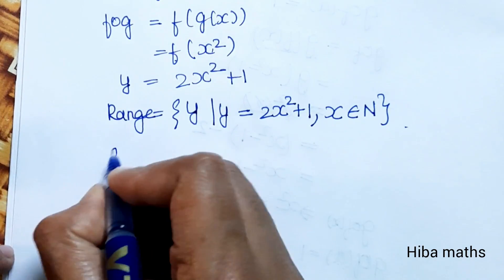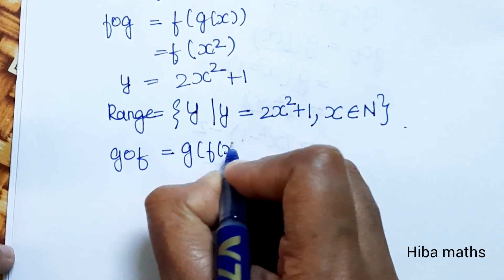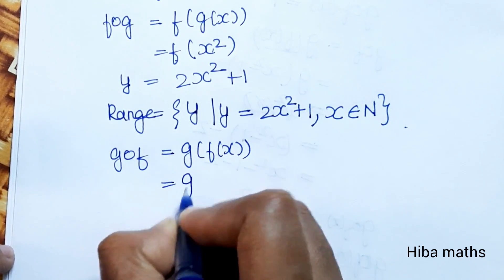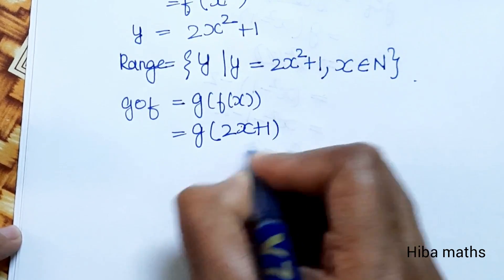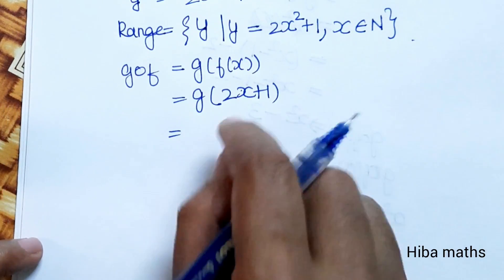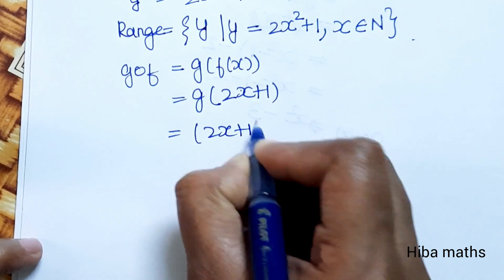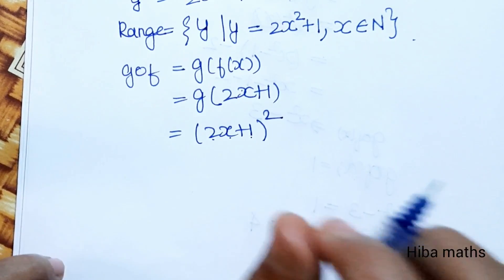Now for g∘f, g(f(x)) means g(2x+1). Since g(x) = x², we substitute the full term: (2x+1)² = (2x+1)².